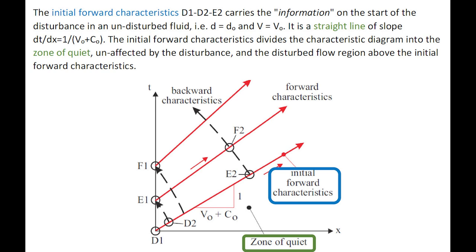The initial forward characteristics, d1, d2, e2, carries information on the start of this disturbance, in an undisturbed fluid with water depth d0 and velocity v0. Thus the initial forward characteristic is a straight line, dividing the characteristic diagram into the zone of quiet unaffected by the disturbance, and the disturbed flow region above.